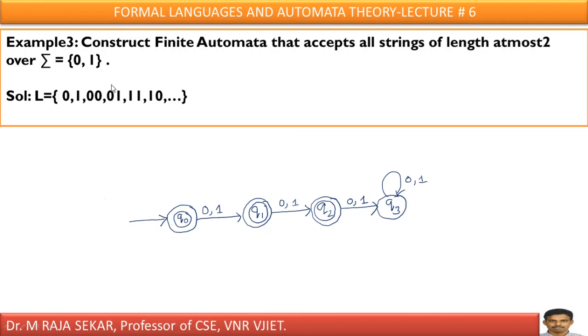What about next? Next example, construct finite automata that accepts all strings of length at most 2. At most 2 means what? That may be 0 length string, that may be 1 length string, that may be 2 length string.